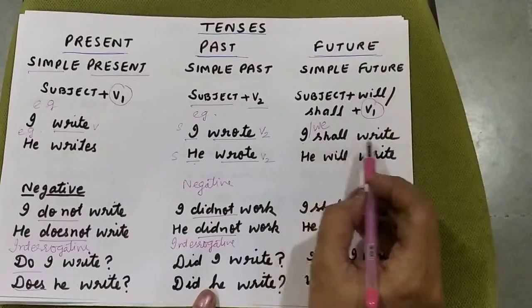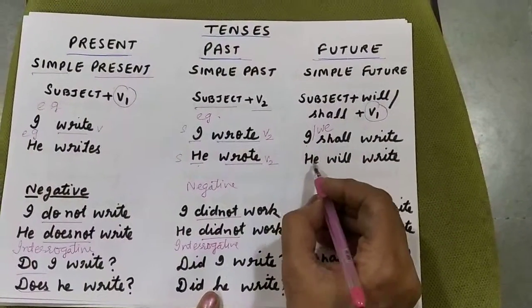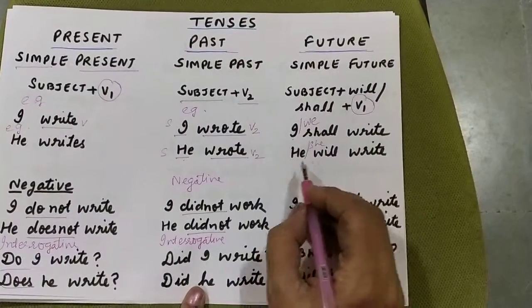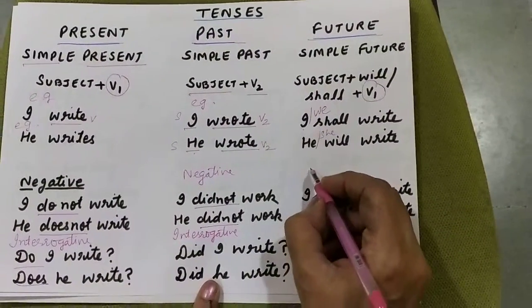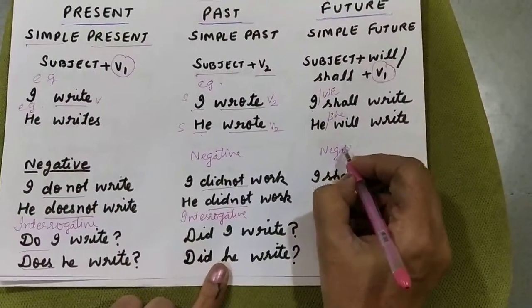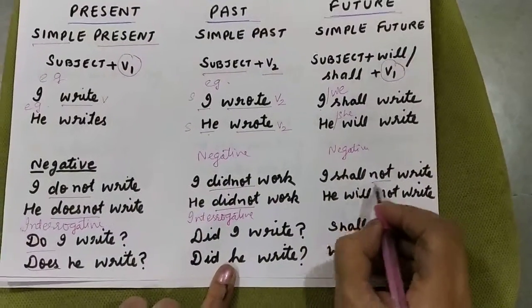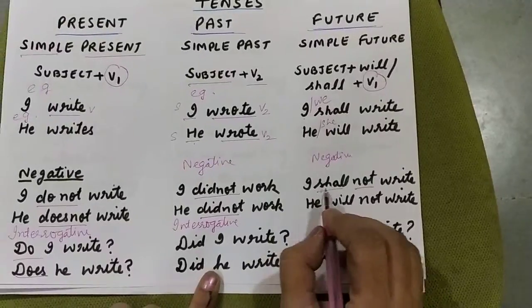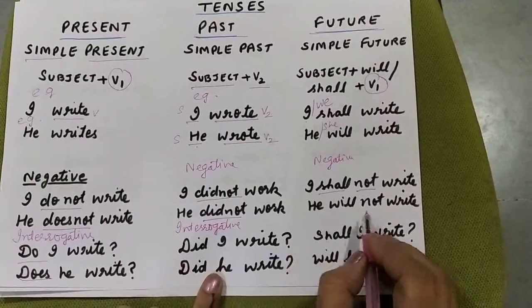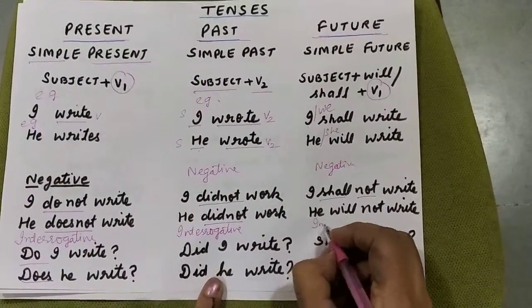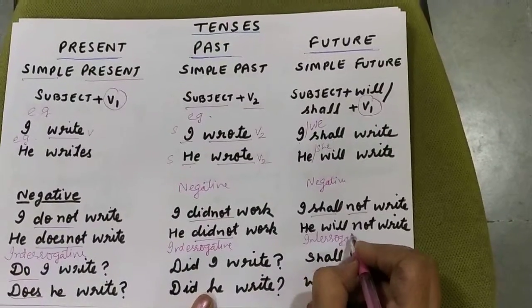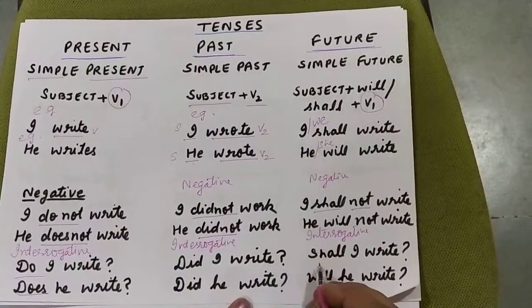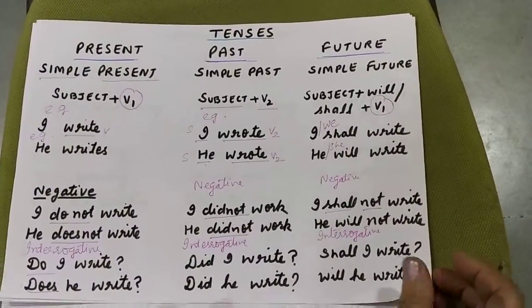So it will be 'I shall write' or 'we shall write'. And with he, she, it, we use 'will'. So 'he will write' or 'she will write'. And if we have to make it a negative sentence, we use 'not' with 'shall' or 'will'. So the sentence would be 'I shall not write' or 'he will not write'. And if we have to change it into interrogative, again we will take out the helping verb. So 'shall I write?' or 'will he write?'